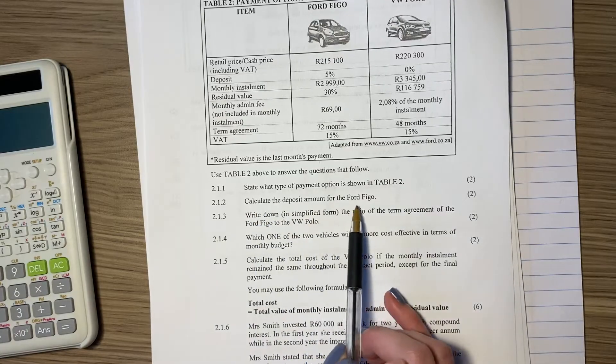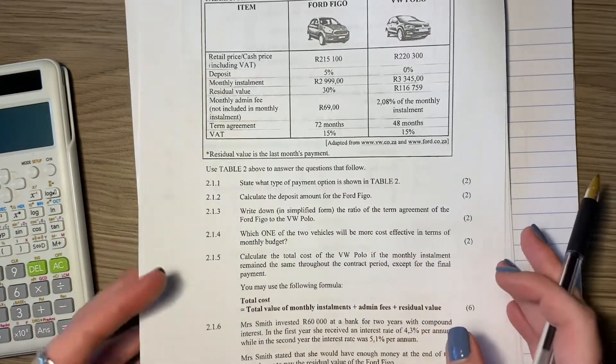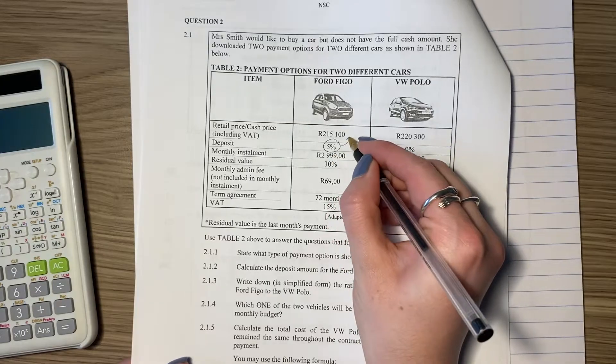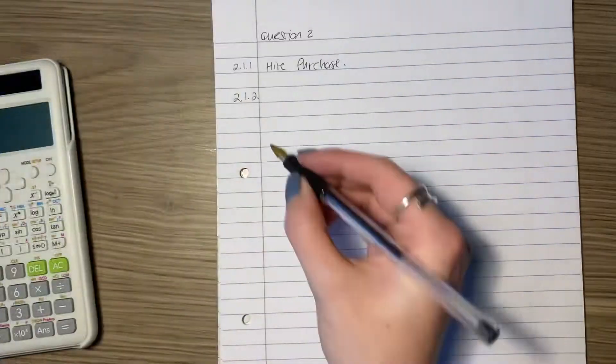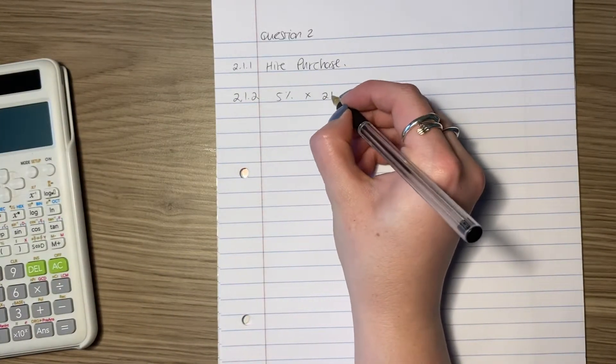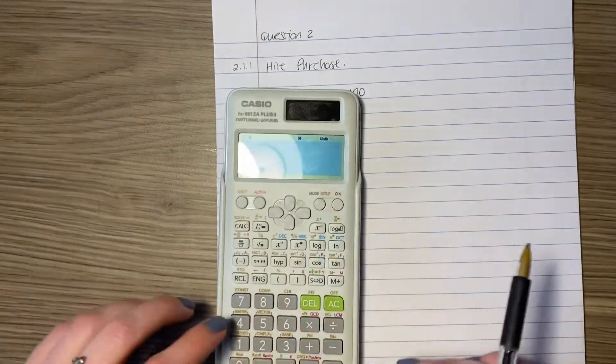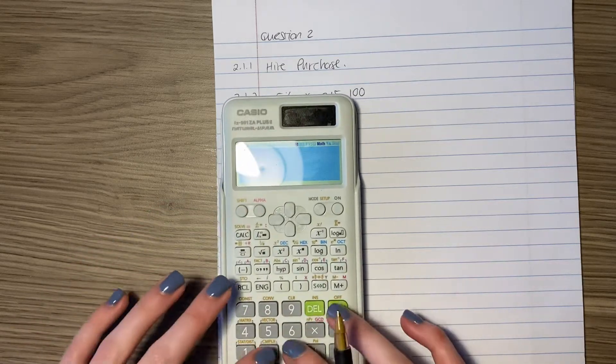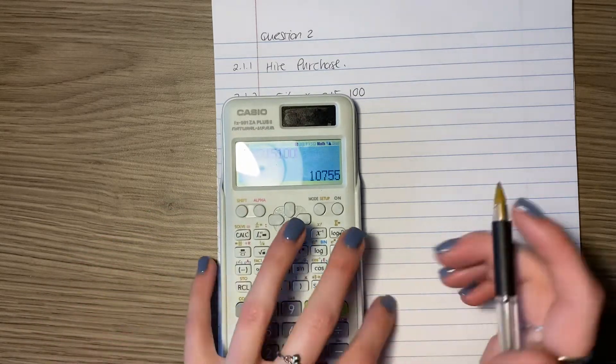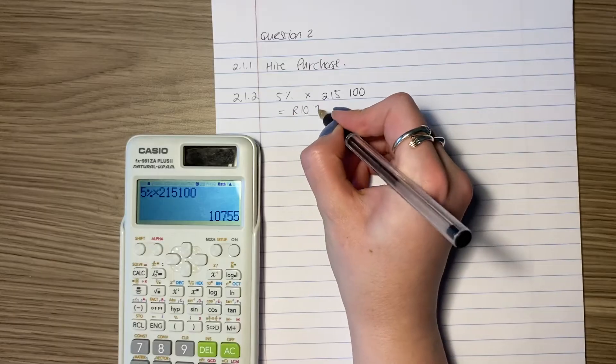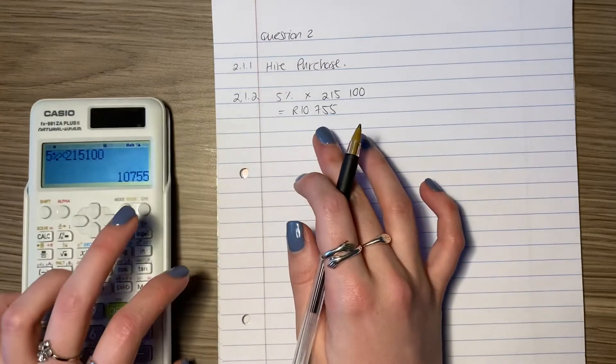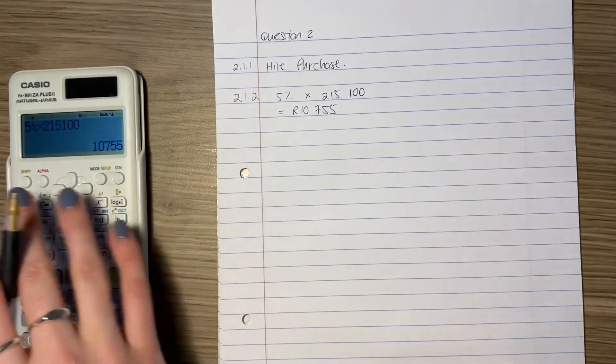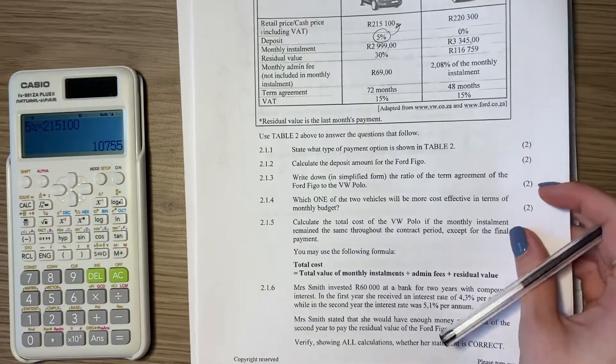Then it says calculate the deposit amount for the Ford Figo. So for the Ford Figo, the deposit is 5% of this amount there. What we're going to do is we're going to say 5% times by 215,100, which is the cost of the car. I'm going to plug that into our calculator. 5% times 215,100, and we write that it is this amount here. Now please be careful with this. Students often forget to put their rand values in. This is a rand amount, so remember to put your rand value in.